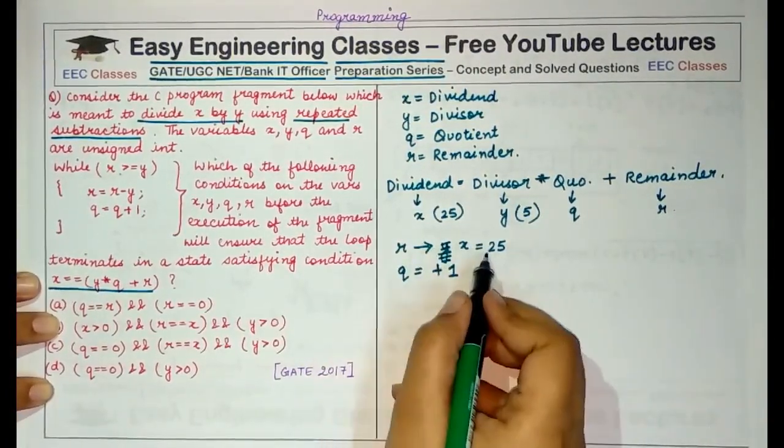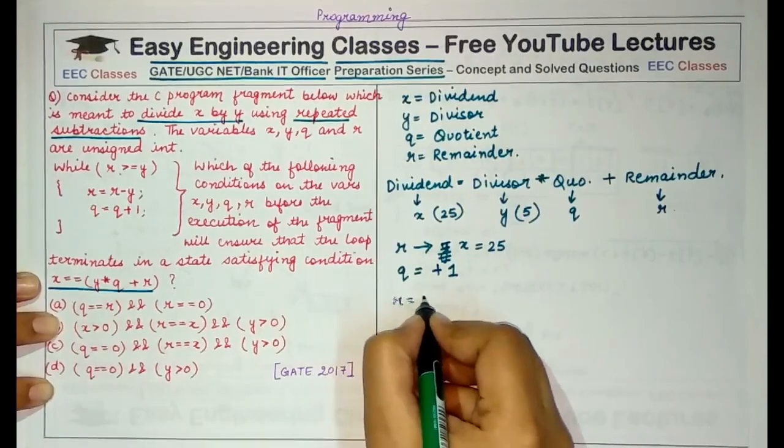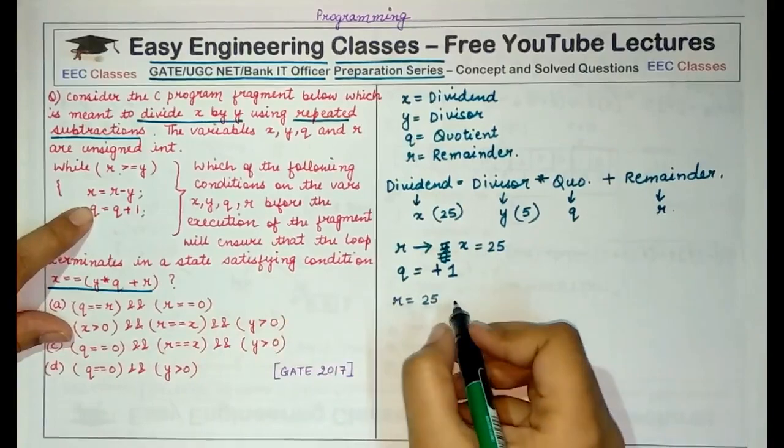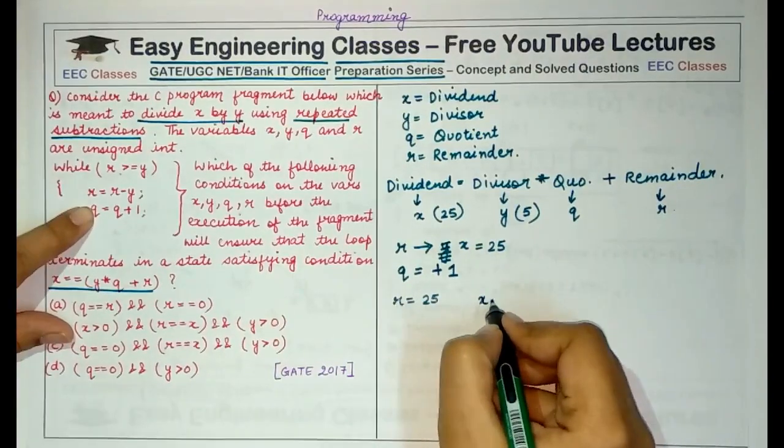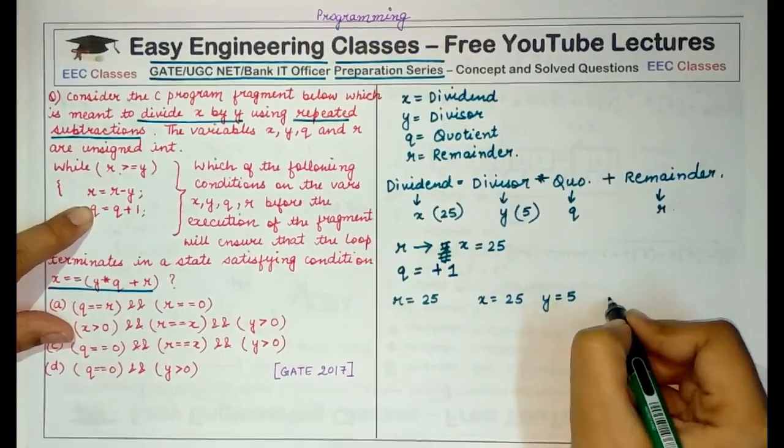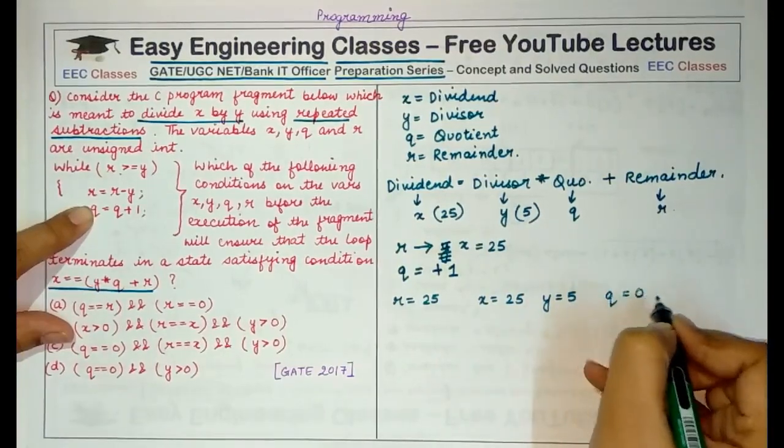So continuing with this example, since initially R has the value of 25 and we enter into the loop, X is 25, Y is 5 and quotient must be initialized to 0.